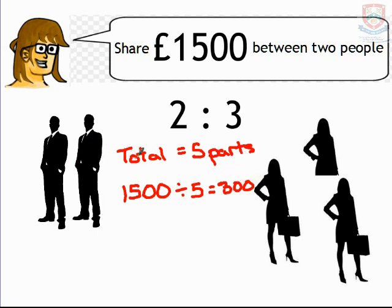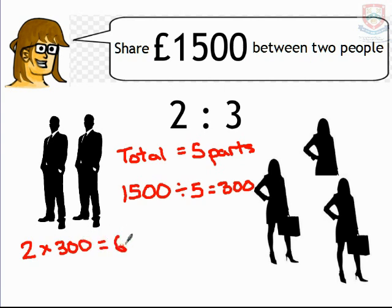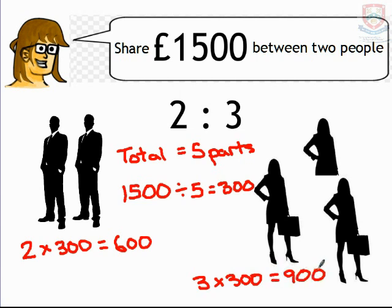Now that doesn't mean that on the left we have £300 and on the right we have £300. That just means that each part is worth £300. So on the left we have two parts — that's going to be two lots of £300, which equals £600. On the right we have three parts, so this would be 3 times £300, which is £900.